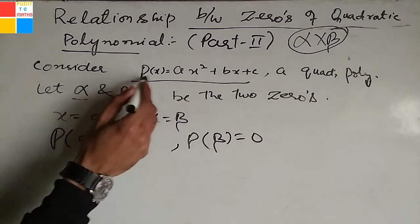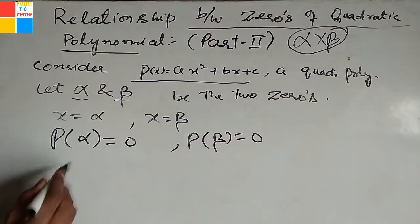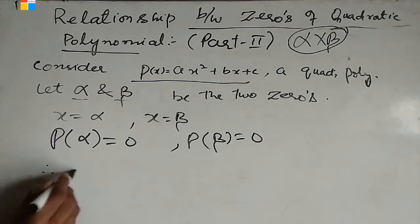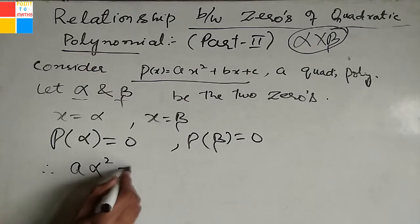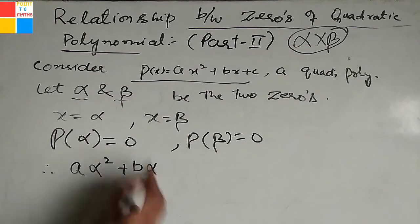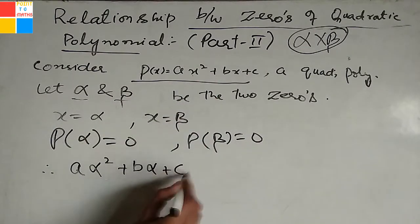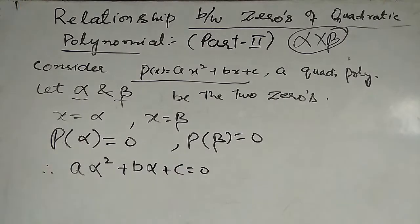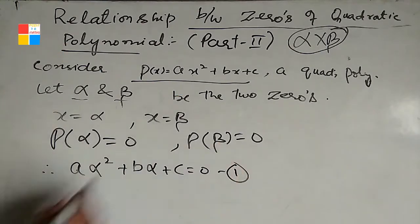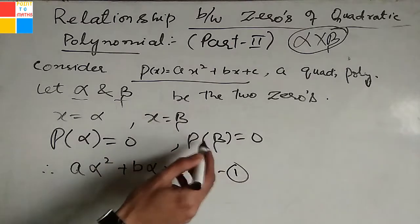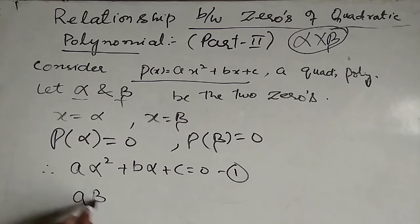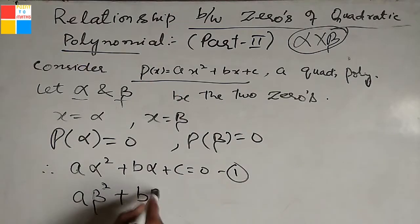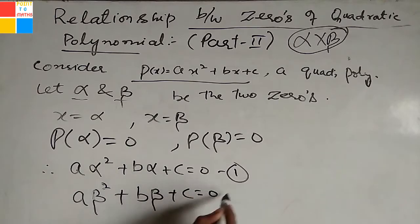So this is p(alpha), and we replace x as alpha: a·alpha squared plus b·alpha plus c must be equal to zero — this is equation one. And p(beta), replacing x as beta: a·beta squared plus b·beta plus c must be equal to zero — this is equation two.